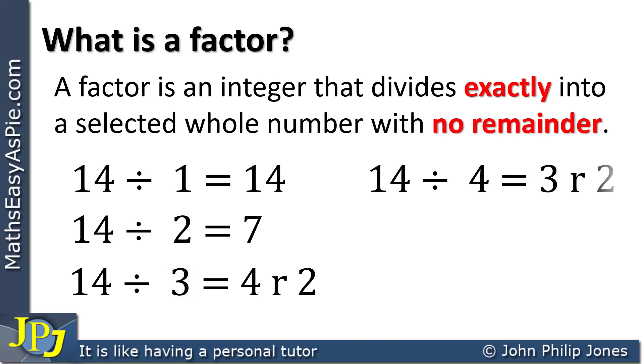14 divided by 4 goes 3 times with a remainder of 2. Consequently, 4 is not a factor. We then can divide 14 by 5. This goes twice with a remainder of 4.